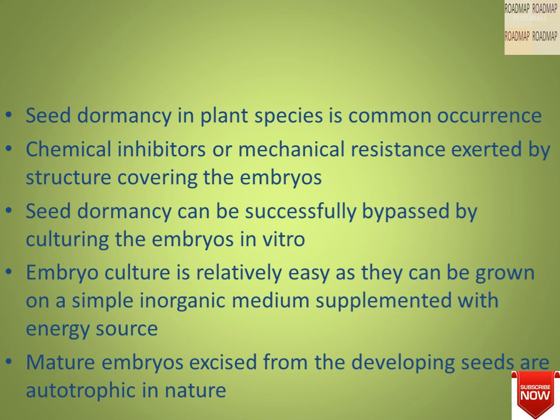Seed dormancy in plant species is a common occurrence seen in embryo culture. Chemical inhibitors or mechanical resistance is exerted by the structure covering the embryos. Seed dormancy is successfully bypassed by culturing embryos in vitro. Embryo culture is relatively easy as they can be grown on a simple inorganic medium supplemented with an energy source like sucrose. Mature embryos are excised from developing seeds and are autotrophic in nature.